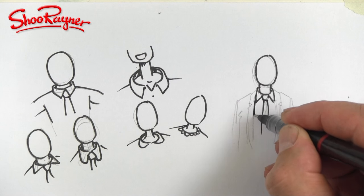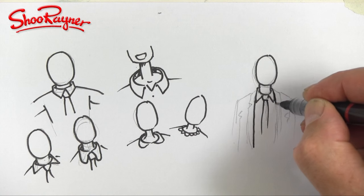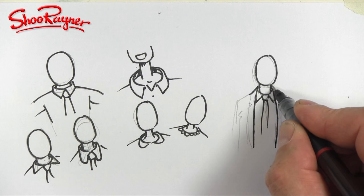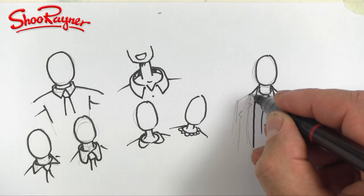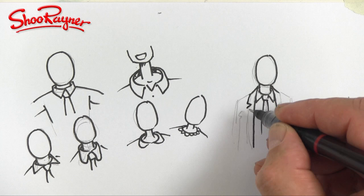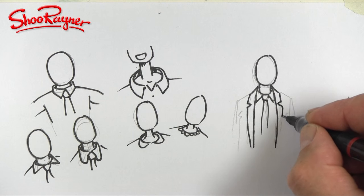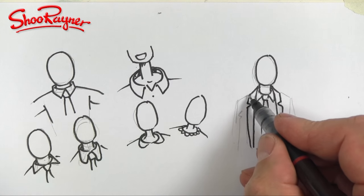Then draw a line down from the collar maybe just slightly to the side of it and then curve very gently there. That will then come in V shape there and then the suit lapel will then go like that.